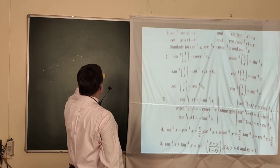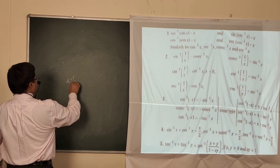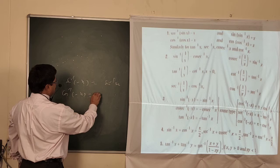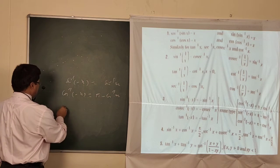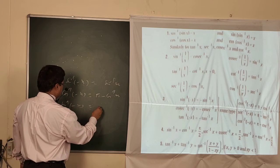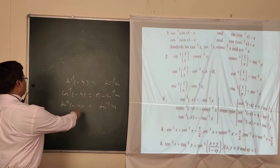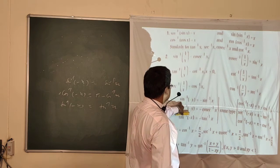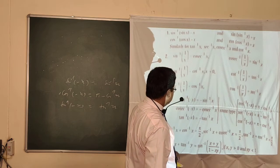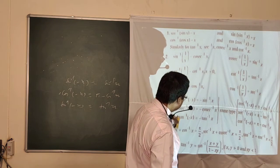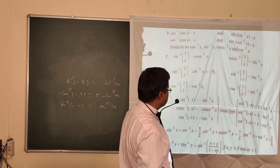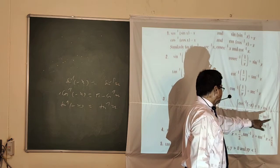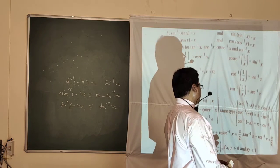Now for negative arguments: sin⁻¹(-x) = -sin⁻¹x. But cos⁻¹(-x) = π - cos⁻¹x. Similarly tan⁻¹(-x) = -tan⁻¹x. So sin⁻¹(-x) = -sin⁻¹x, cosec⁻¹(-x) = -cosec⁻¹x, and tan⁻¹(-x) = -tan⁻¹x. Only for cos⁻¹(-x) and sec⁻¹(-x) we get π minus the inverse: cos⁻¹(-x) = π - cos⁻¹x and sec⁻¹(-x) = π - sec⁻¹x.